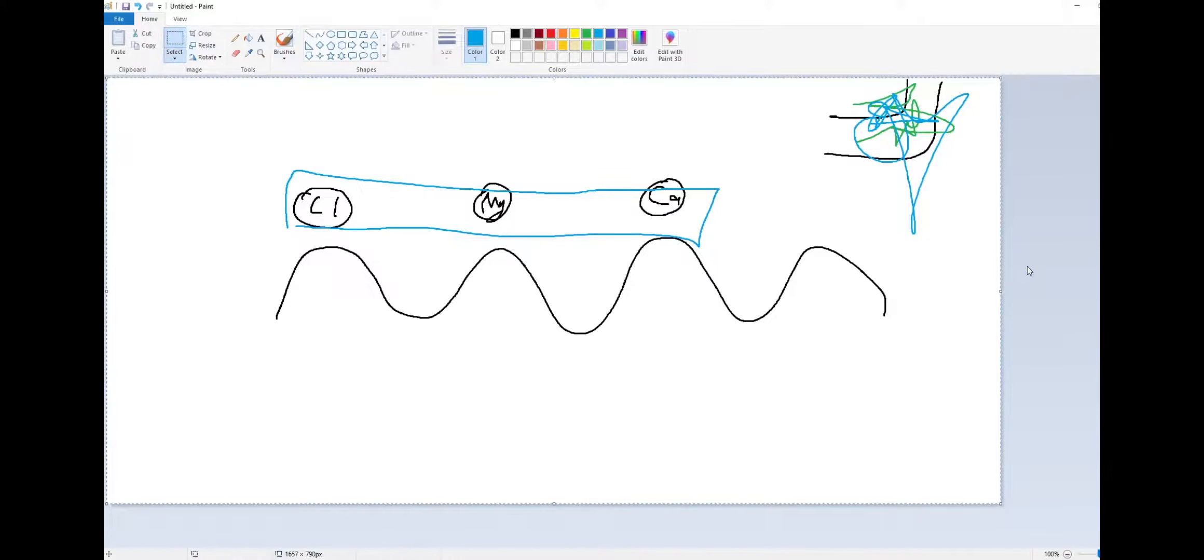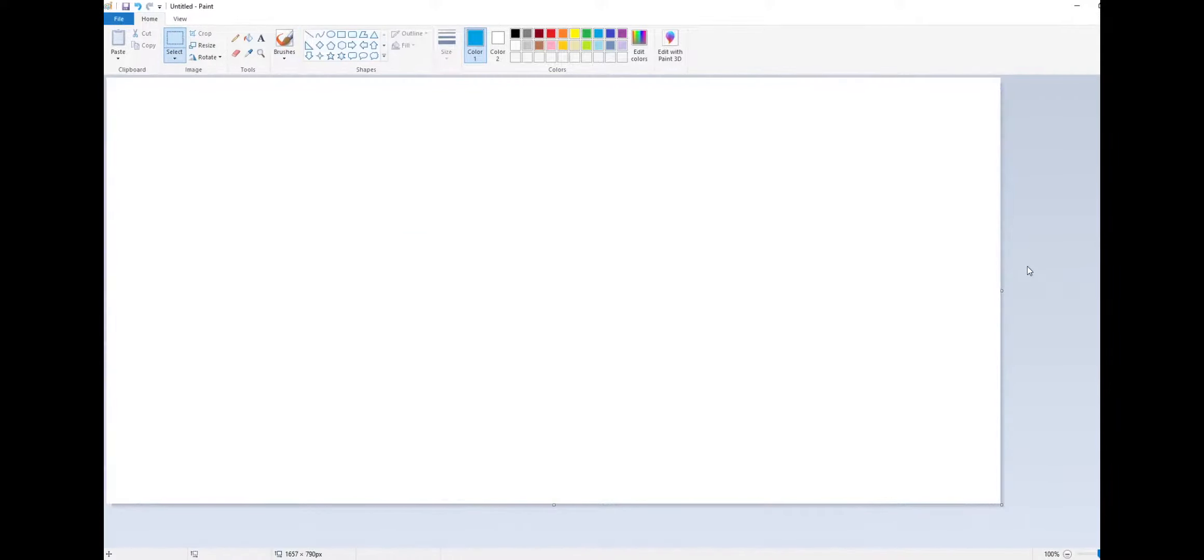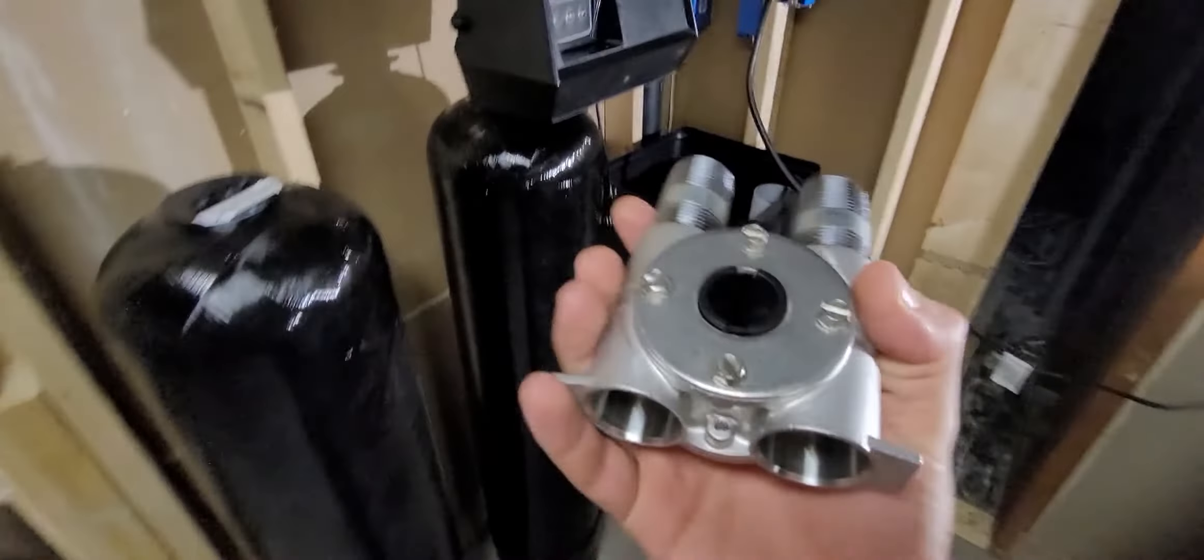So now that we kind of understand what hard water is, a water softener, well, it's a magical device. You know, hard water comes in and soft water comes out, you can't explain that. So today we'll be installing a Fleck 9100, which has actually two tanks, so you don't have to really bother with a regeneration cycle interrupting your water supply.